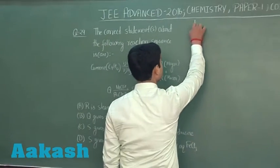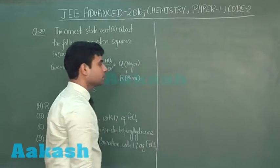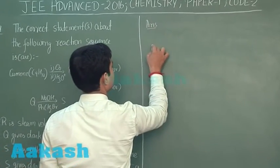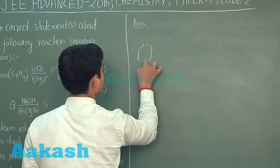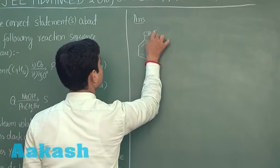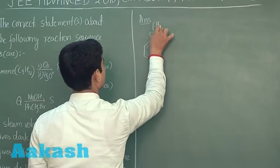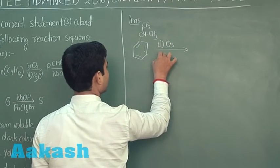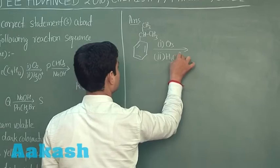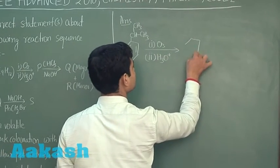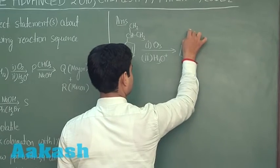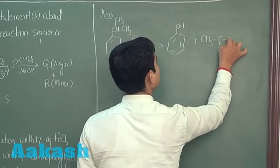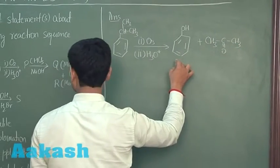How can we solve this question? First of all, let us write all the reactions. We have cumene. The aerial oxidation of cumene followed by hydrolysis gives us phenol and acetone. This phenol is P.